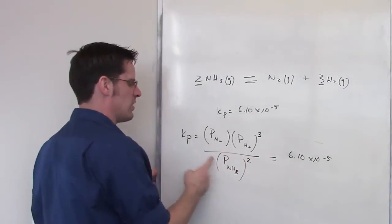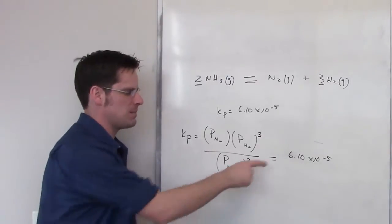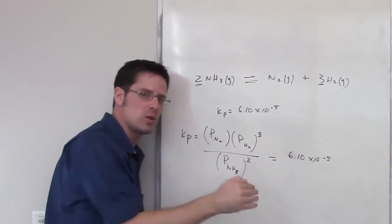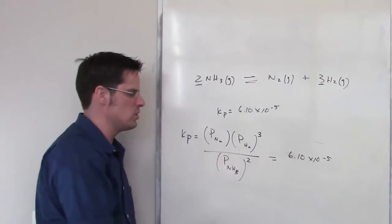So which of these two things is favored, the numerator or the denominator? Well, mathematically speaking, because that number is much smaller than 1, the denominator has to be much larger than the numerator.